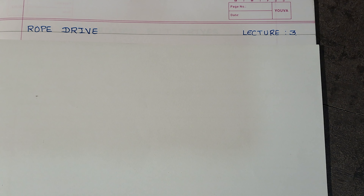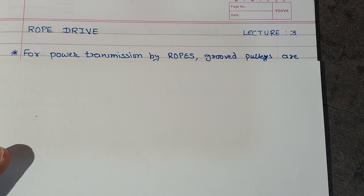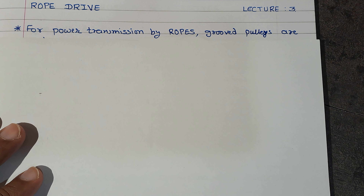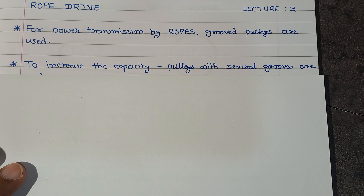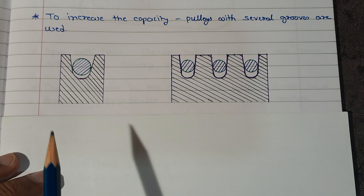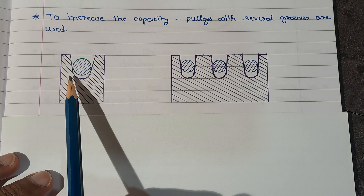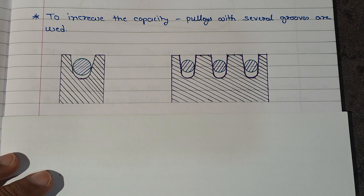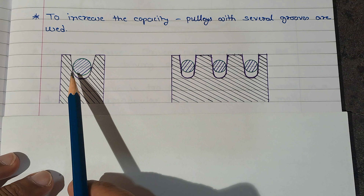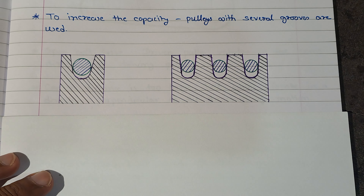Now in this third lecture we are going to talk about rope drives. Rope drive is again used for power transmission, and the pulley shape is a little different from V-belt drive. Here the pulley has a circular groove, and the rope passes through this groove, having contact on the sides and not touching the bottom of the groove.